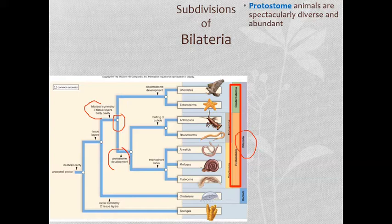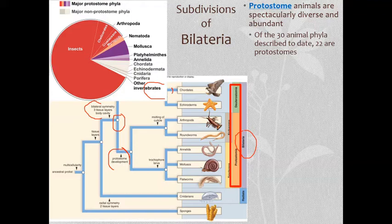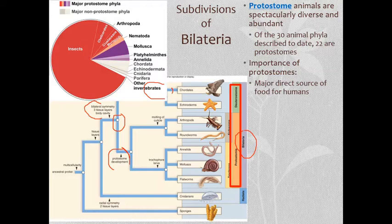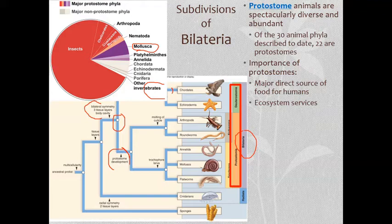The protostomes are fantastically diverse and very abundant. Of approximately 30 phyla described, about 22 are actually protostomes — the overwhelming majority of animals. These protostomes are fantastically important to us: we eat things like the mollusks — clams, scallops, and oysters. They provide a lot of ecosystem services, which are roles these organisms play within the food chain or within the environment that benefit us either directly or indirectly.